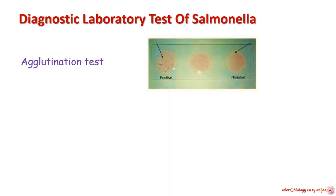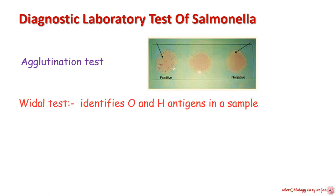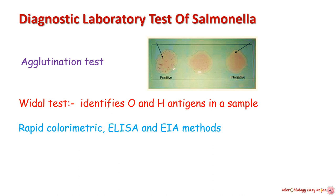Serological methods for diagnosis include the agglutination test, where known and unknown sera are mixed on a slide — if clumping occurs, the test is positive. Commercial kits are now available for detection of salmonella in samples. The Widal test identifies O and H antigens in the sample.